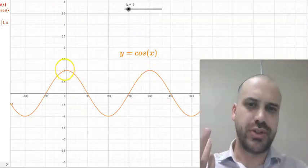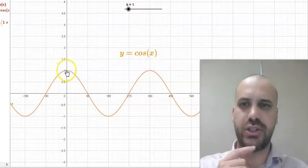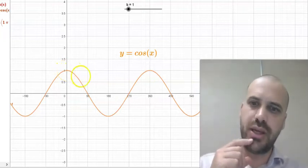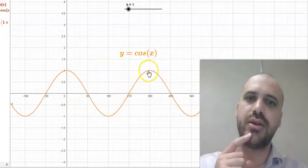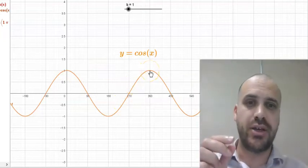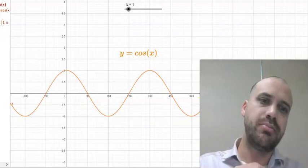Imagine you were on a roller coaster. This cosine function starts at the top and you go wheee, boom, and then you're back at the top again and you start again. Wheee, boom,